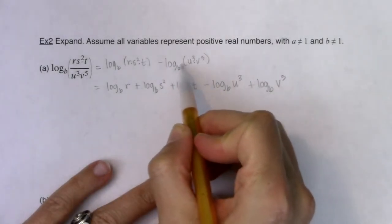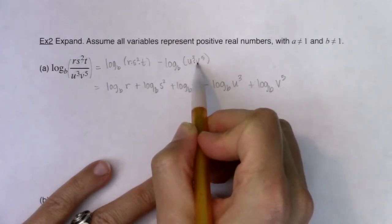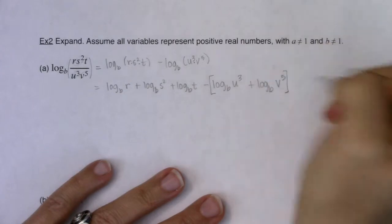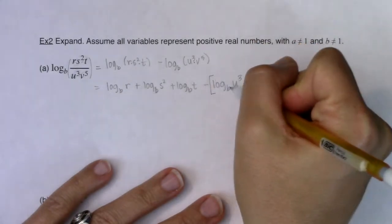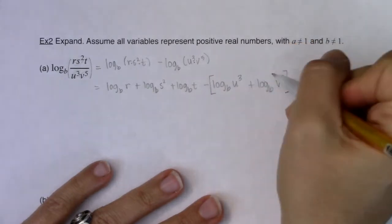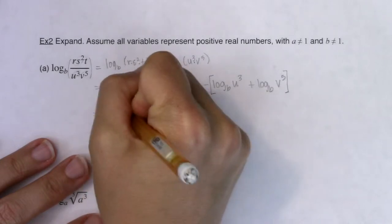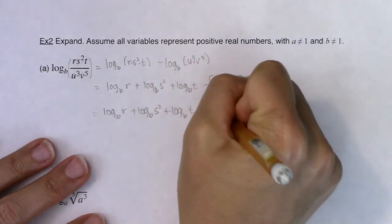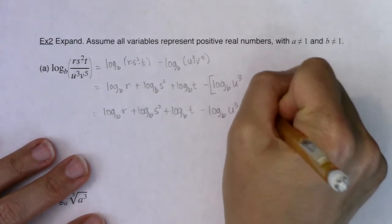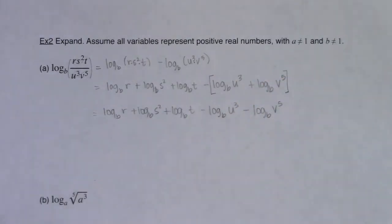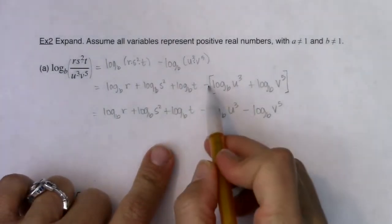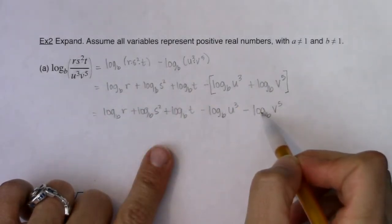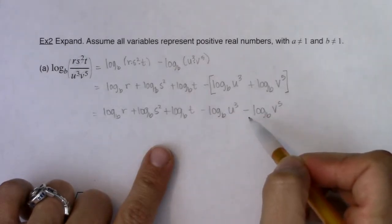This subtraction sign gets applied not only to the u cubed term, but to the v to the fifth term. Because when I expand this logarithm using the product property, you have to remember there's a grouping symbol around that expansion. So I need to distribute this negative not just to the u cubed term, but also to the v to the fifth term. So really, I have log base b of r plus log base b of s squared plus log base b of t minus log base b of u cubed minus log base b of v to the fifth. Every term in your denominator should be subtracted — that's what we have with the quotient property. We subtract the logarithm of the denominator.